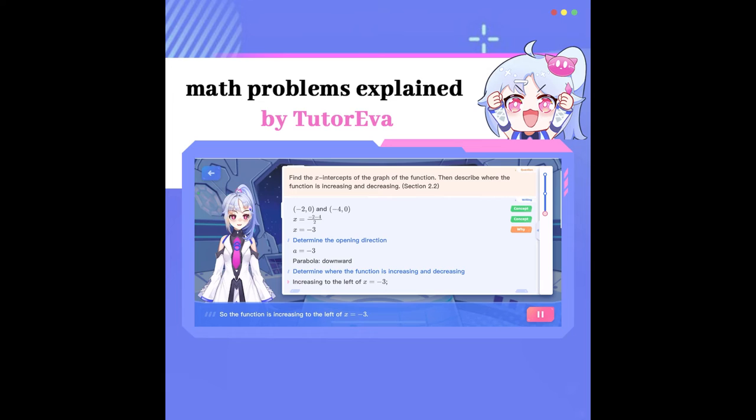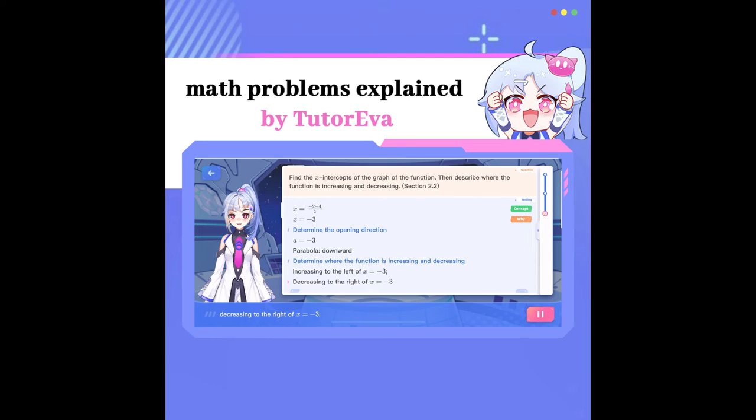So the function is increasing to the left of x is equal to negative 3, decreasing to the right of x is equal to negative 3. Bravo! You solved this question. Thank you.